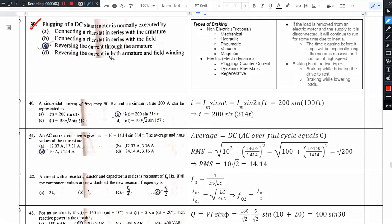Plugging of a DC shunt motor is normally executed by. When discussing electric braking, we have mentioned three types: plugging, dynamic, and regenerative. So what can we do with plugging?